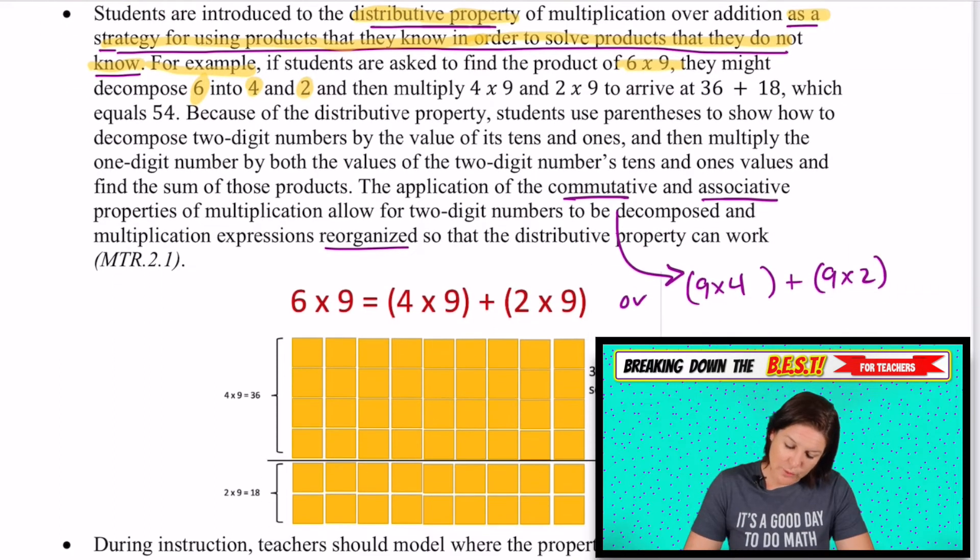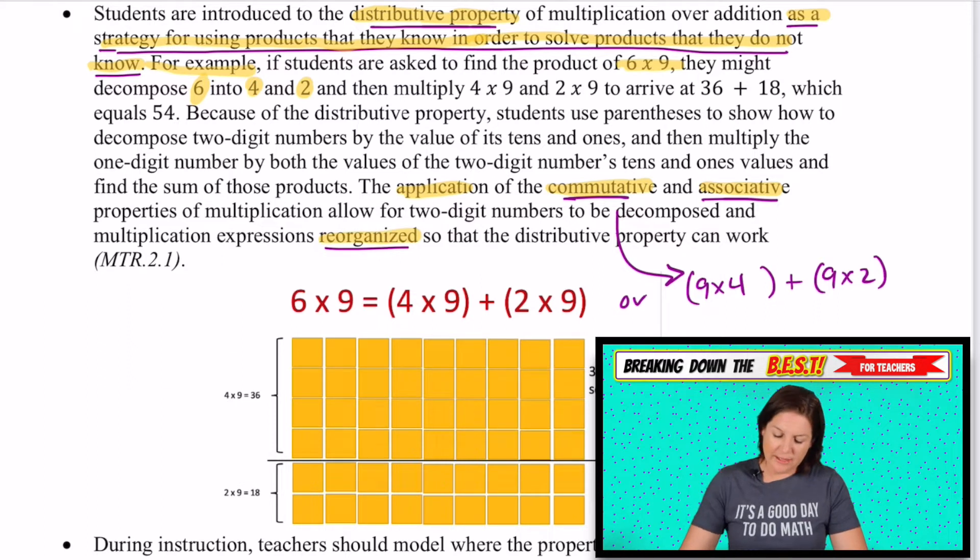Then we need to, what we need to do is apply the commutative and associative properties and say that they can be reorganized. Meaning that like right here, we've got six times nine that could be grouped as four times nine plus two times nine, but we could say it could be nine times four. That would give us the same answer, the same product and nine times two.